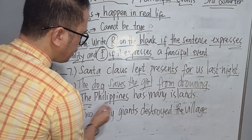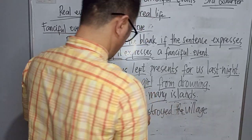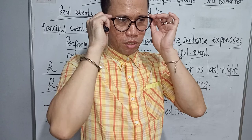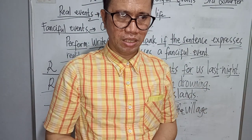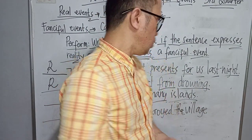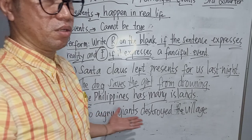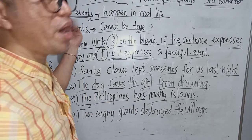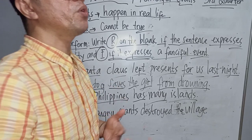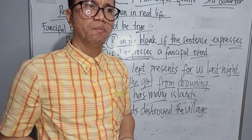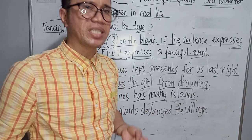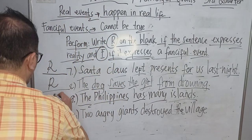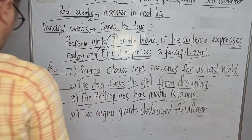Number nine: The Philippines has many islands. We know that the Philippines is composed of many islands. So this statement shows real events — it happens in real life, as our country is composed of many islands. So this is R, or real events.